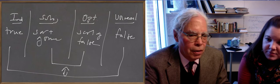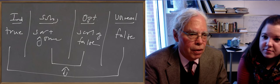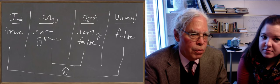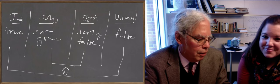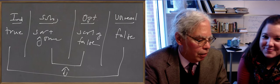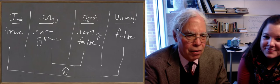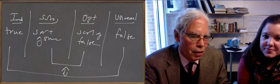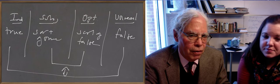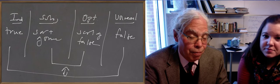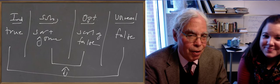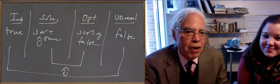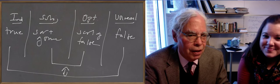So on the two ends, the first column says 'ind' — that's my writing for indicative — which I think is the absence of a mood. And on the other end of the chart, on the far right, it says — and my handwriting is terrible, I realize — 'unreal'.